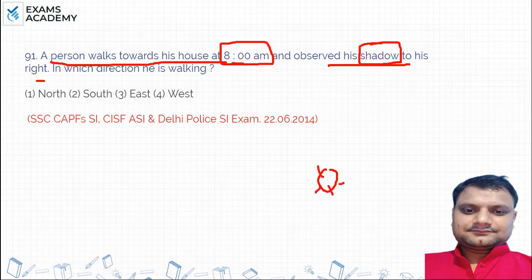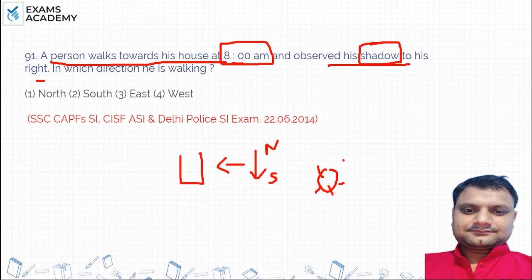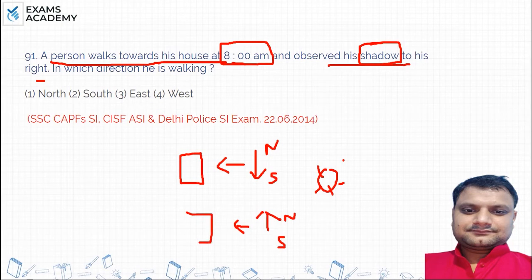What will happen if someone is going from north to south? Where is the shadow? The shadow will be to the right. And if someone is going north, the shadow will become to the left. So the person observes his shadow to his right.